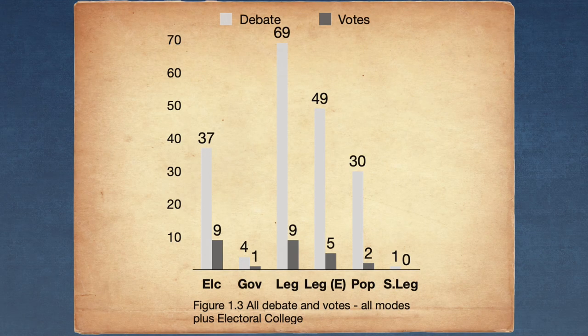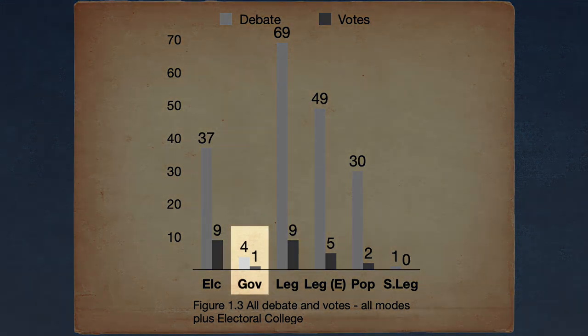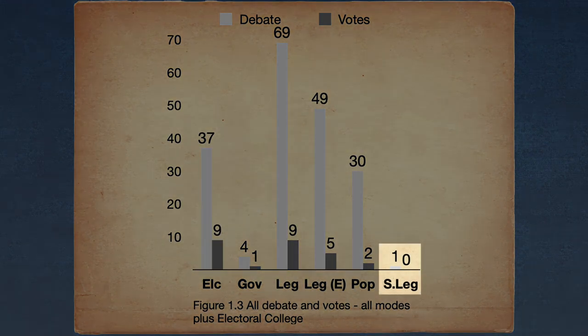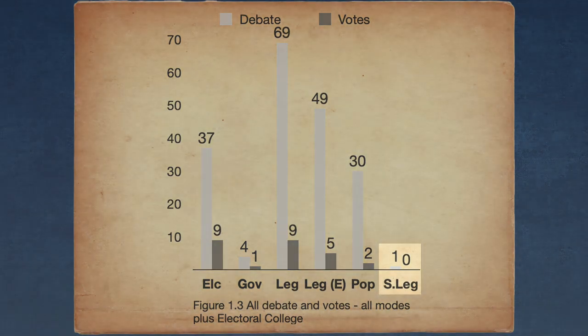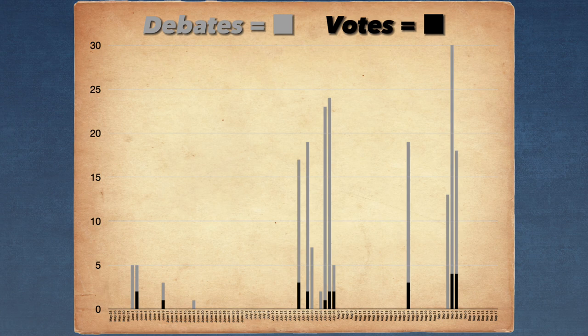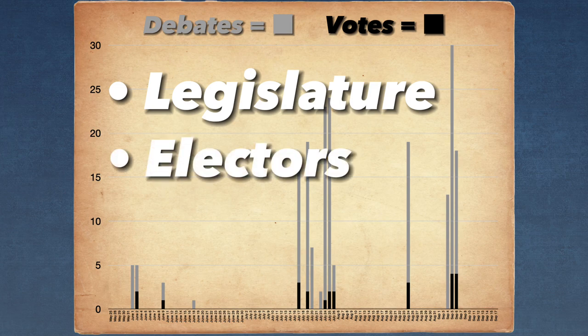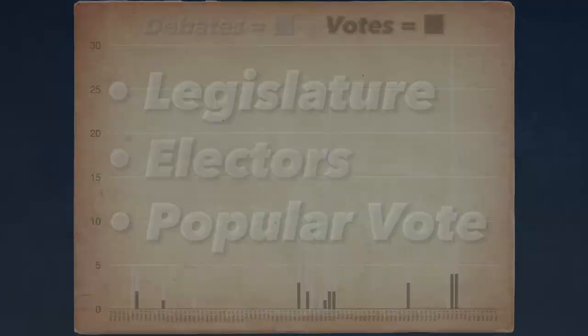Other methods discussed were the governor's method with four debate mentions and one vote, as well as the state legislature's method with only a single debate mention. To reiterate the data of the convention, the three dominant methods discussed in the first phase were the legislature, the electors, and popular vote methods.